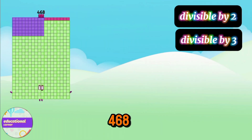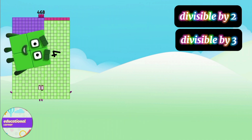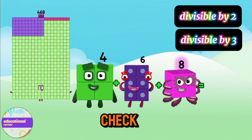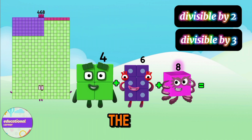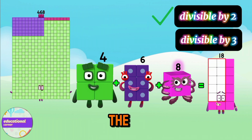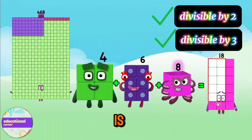Is 468 divisible by six? It must be divisible by both two and three. Check the last digit — it is even, so this number is divisible by two. The sum of the digits is 18, which is divisible by three. So the number 468 is divisible by six.